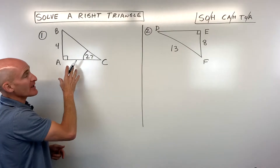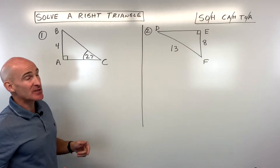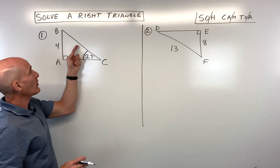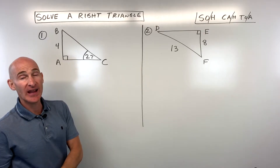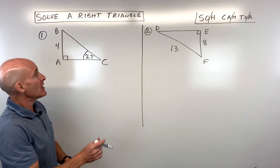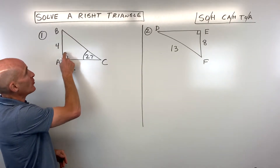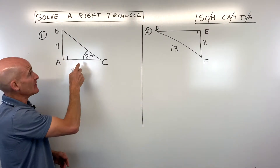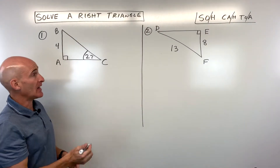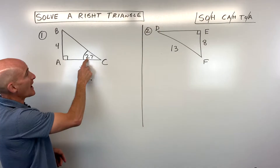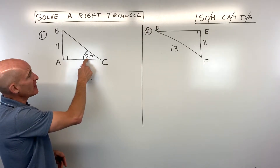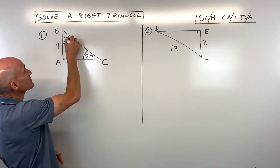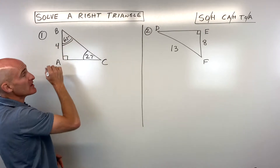We want to find the missing sides and missing angles. In a triangle, all the angles add up to 180 degrees. In a right triangle, the two acute angles must add up to 90, since 90 plus 90 gives 180. So 90 minus 27 gives us 63 degrees for angle B.